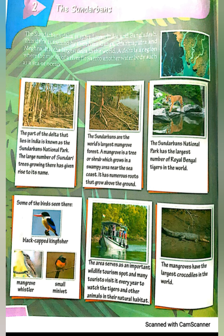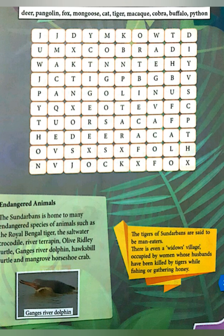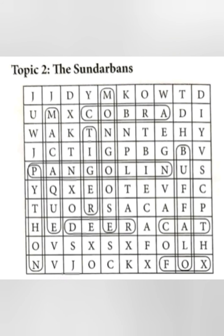Children, on the second page, the names of commonly seen animals in the Sundarbans are hidden. You have to find them, and one is already done for you.